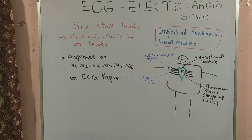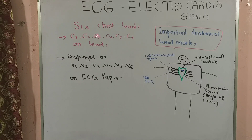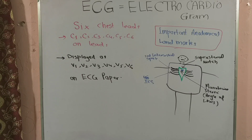When we start our discussion about the chest leads there are certain factors which are very important. First, there are six chest leads. On the machine these are printed as C1, C2, C3, C4, C5, and C6, where C stands for chest leads. But on the ECG paper these are displayed as V1, V2, V3, V4, V5, and V6. So there is a difference — this should be kept in mind.